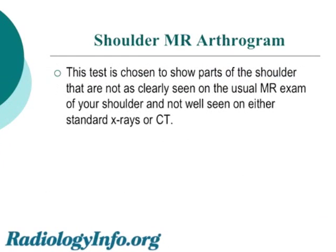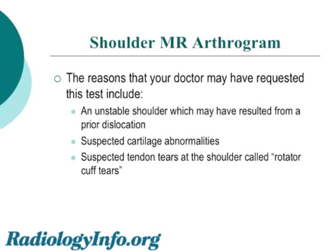This test has been chosen because it shows parts of your shoulder that are not clearly seen on usual studies, including usual MR and on other standard x-rays or on CT. Among the reasons that your doctor may have requested this test include an unstable shoulder, which could have resulted from a prior dislocation, some suspected cartilage abnormalities, or possibly suspected tendon tears at the shoulder, which are sometimes referred to as rotator cuff tears.